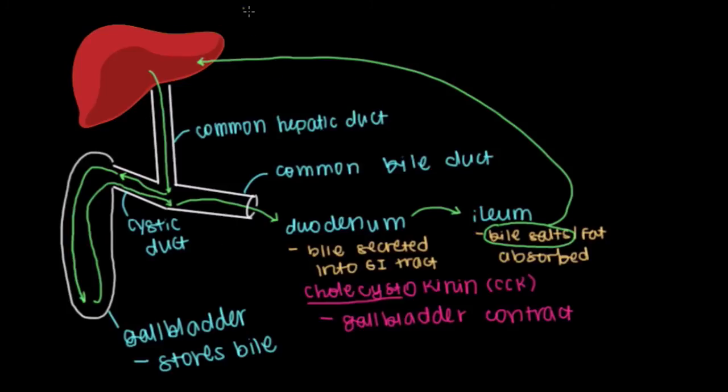If we were to review all the different pit stops that our bile takes in this process: Number one, bile is made in the liver. Then it goes through the common hepatic duct and flows to the cystic duct to be stored in the gallbladder until we receive cholecystokinin as a signal to tell the gallbladder to contract. Then bile is squeezed out of the gallbladder, re-enters the cystic duct, and goes into the common bile duct. The common bile duct is the last part of the biliary tree, which releases its contents into the duodenum.